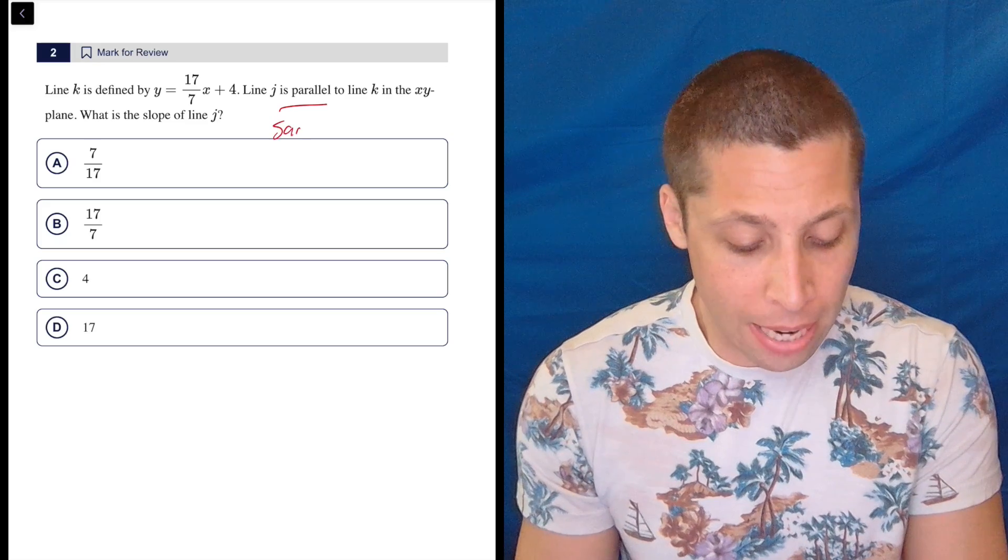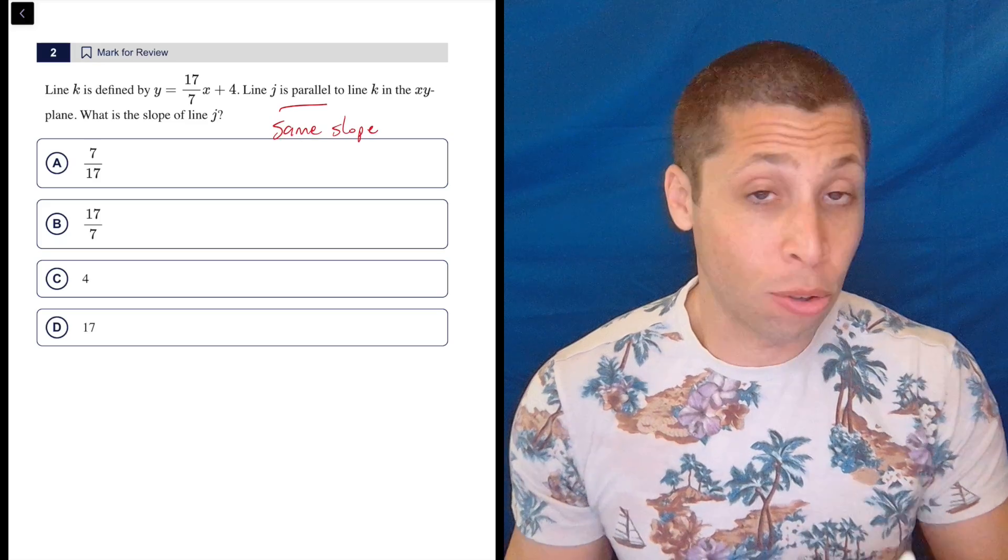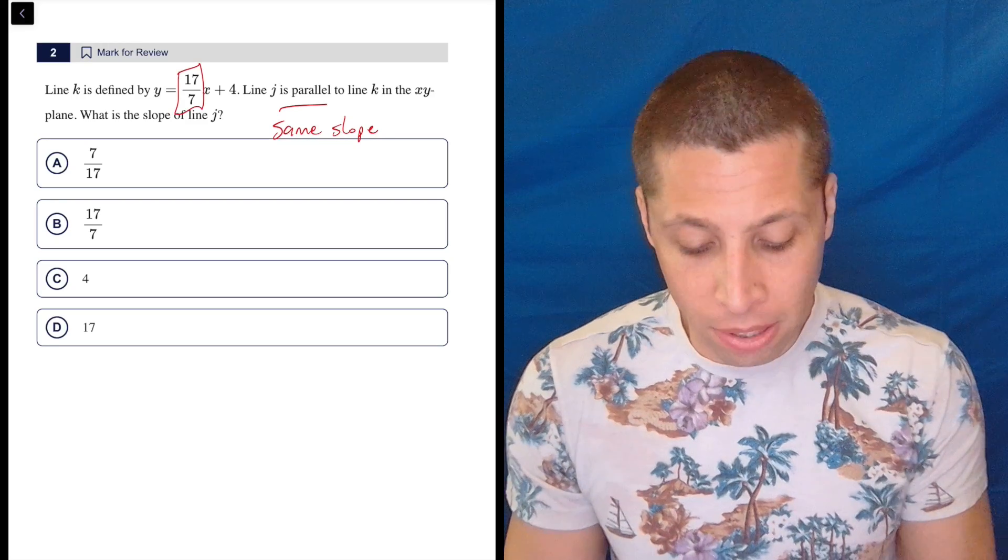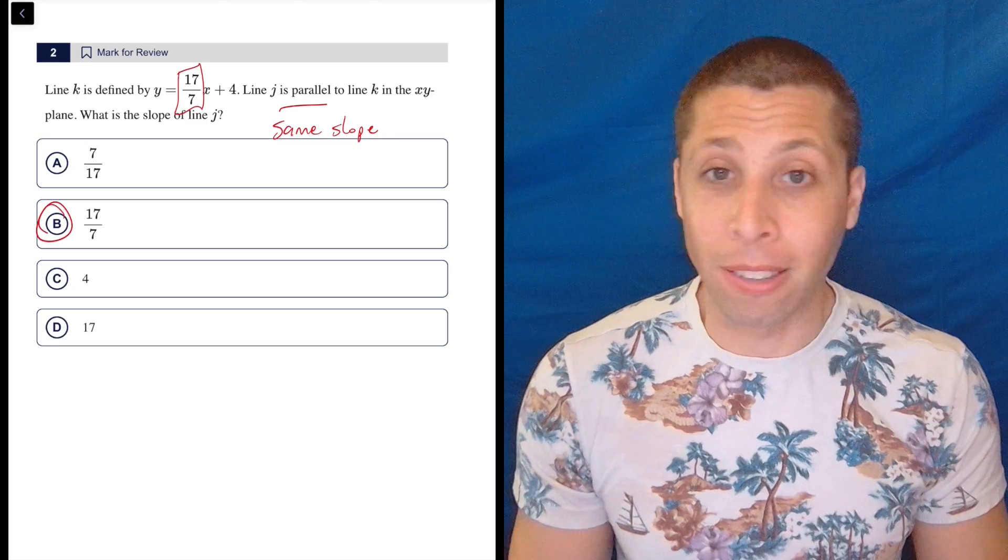Parallel lines have the same slope. This is written in y equals mx plus b. There is nothing to do. The slope is 17 sevenths. So the slope of the other line is 17 sevenths.